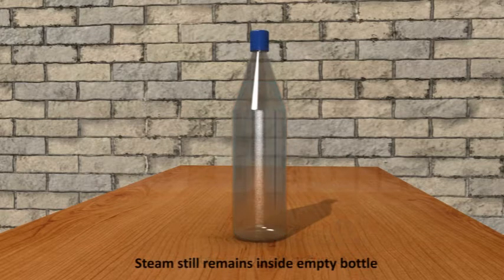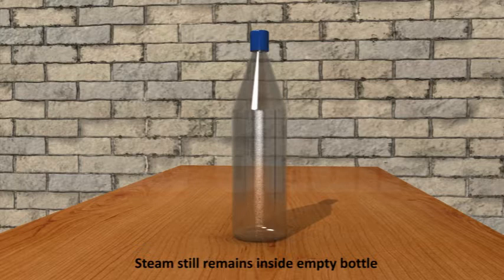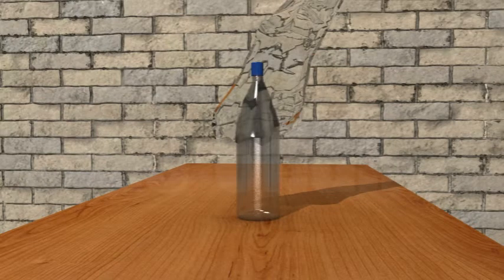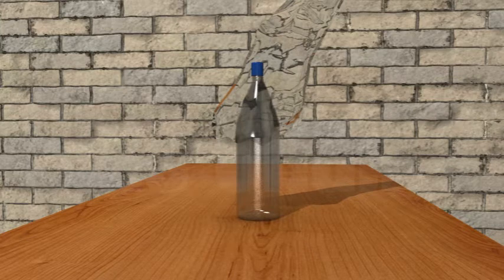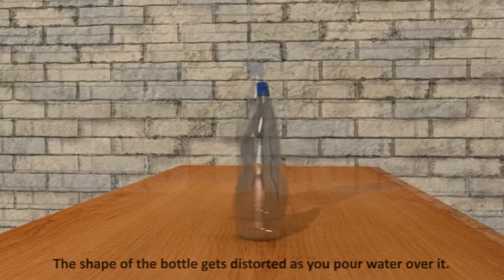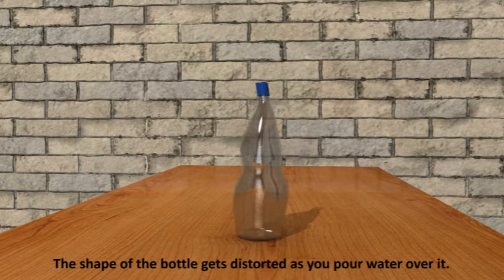Empty the bottle and immediately cap it tightly. Place the bottle under running water. The shape of the bottle gets distorted as you pour water over it.